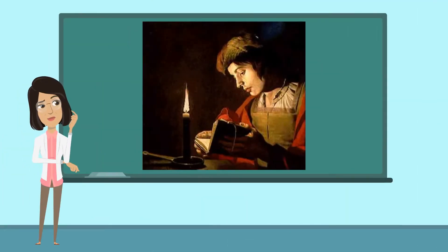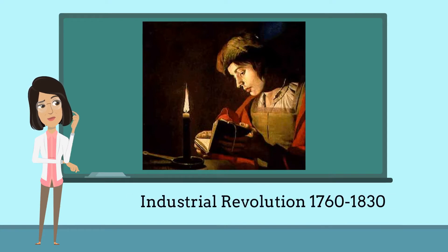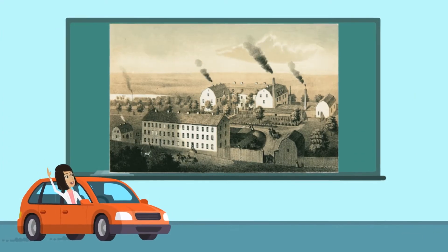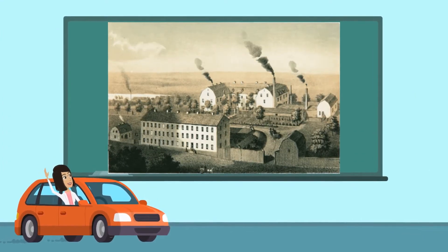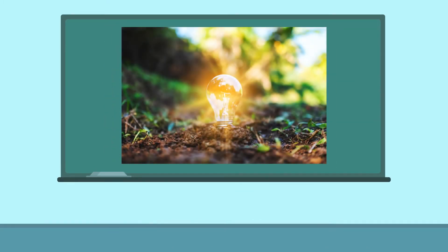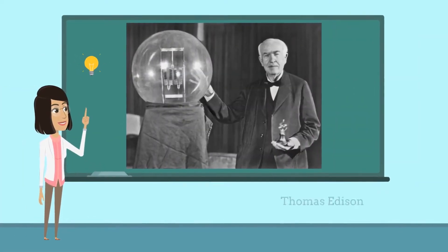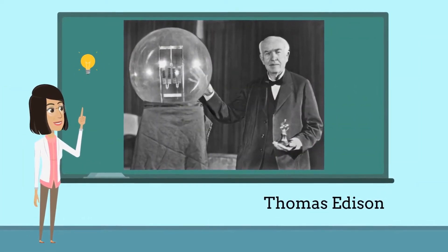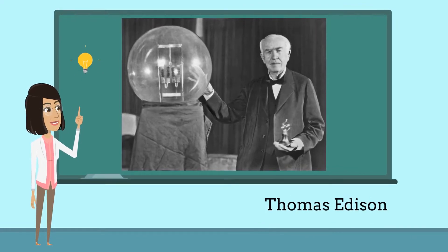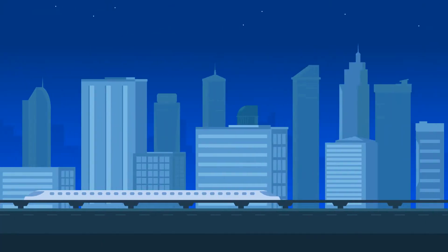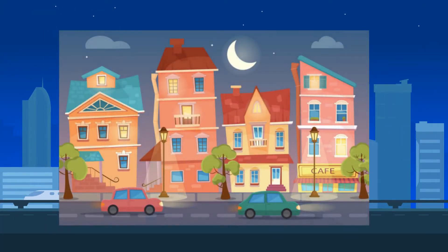A long time ago humans lit their houses by lighting candles and burning coal, but this all changed in 1760 at the start of the Industrial Revolution. During this time technology really advanced, especially in the manufacturing industry. This was also when the electric bulb was invented. In 1879, Thomas Edison invented a safe, affordable, and easily reproducible light bulb that burned for 13 and a half hours. This changed the way we lit our homes and our cities.